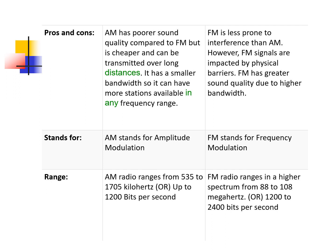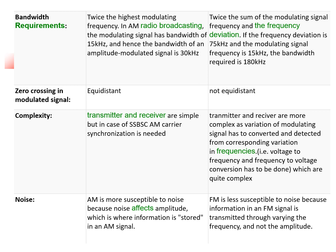FM is less prone to interference than AM; however, FM signals are impacted by physical barriers. FM has greater sound quality, which is why music radio stations use FM as their carrier wave. AM is more susceptible to noise than FM because noise affects amplitude. So when you listen to an AM station, you will hear noise in the background, while when you listen to an FM station, the music you hear is of good quality.